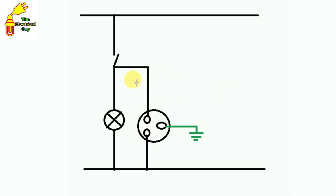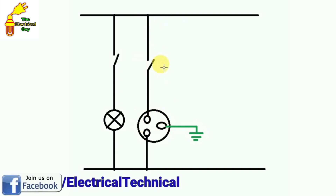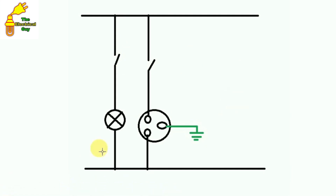If we want to control this socket separately — meaning not through this switch but through another switch — how will we do it? First of all, remove this wire connected here. We will place a new switch here. From here to the above terminal, connect with this phase supply. Now this socket is controlled by this switch and this bulb is controlled by the original switch. This was a basic electrical connection explaining how any electrical equipment is connected in a single-line diagram.